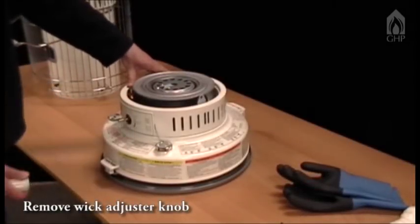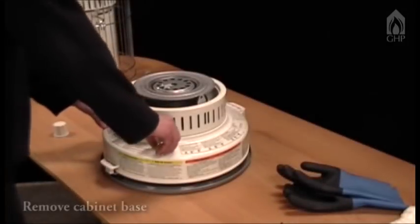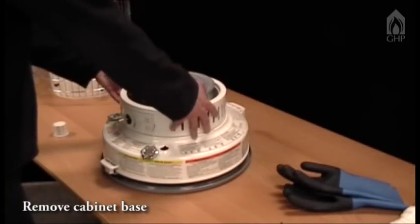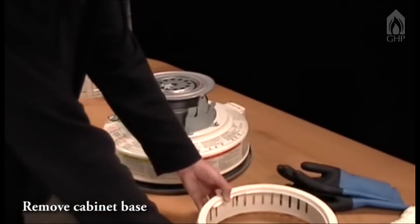Gently pull the wick adjustment knob off the heater. Remove the cabinet base by lifting it from the back and tilting it forward to clear the wick adjuster assembly.